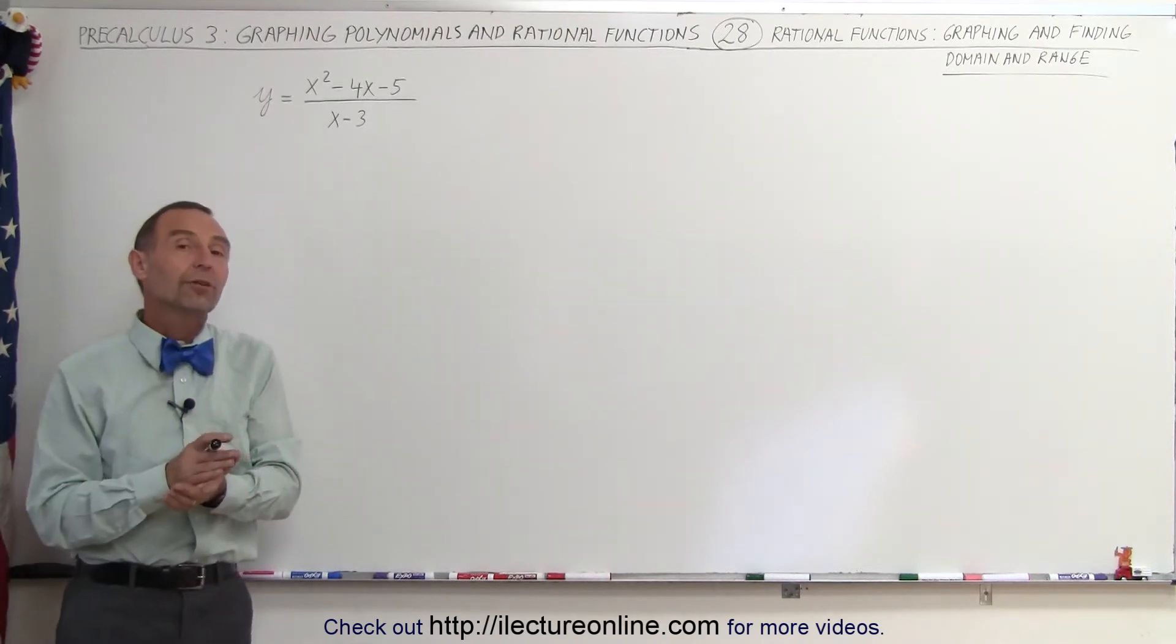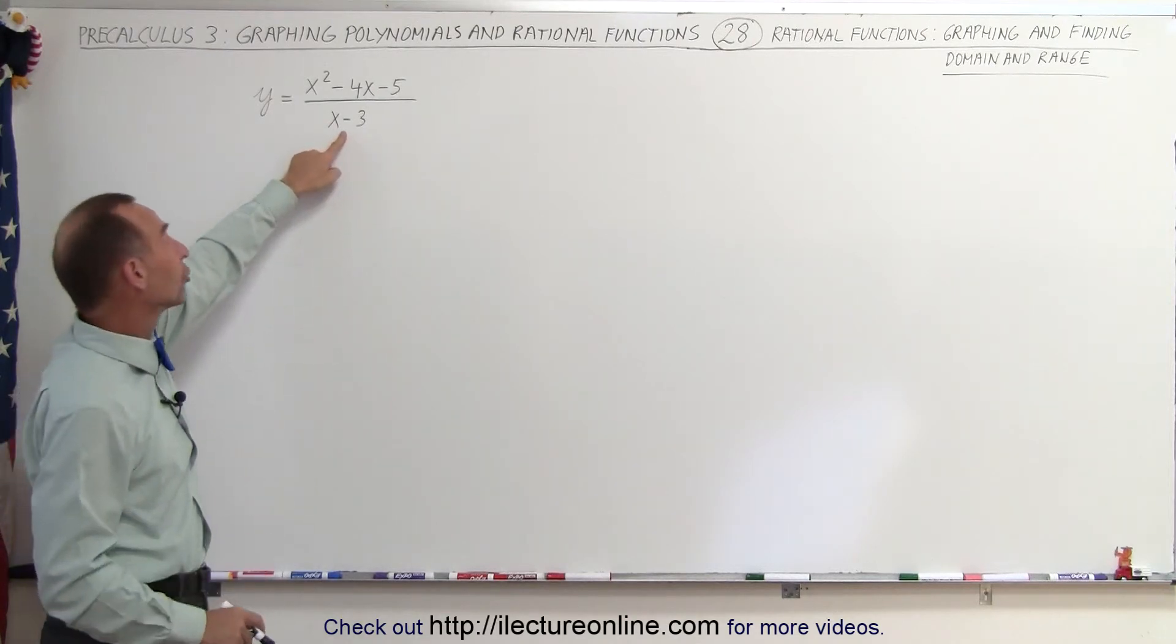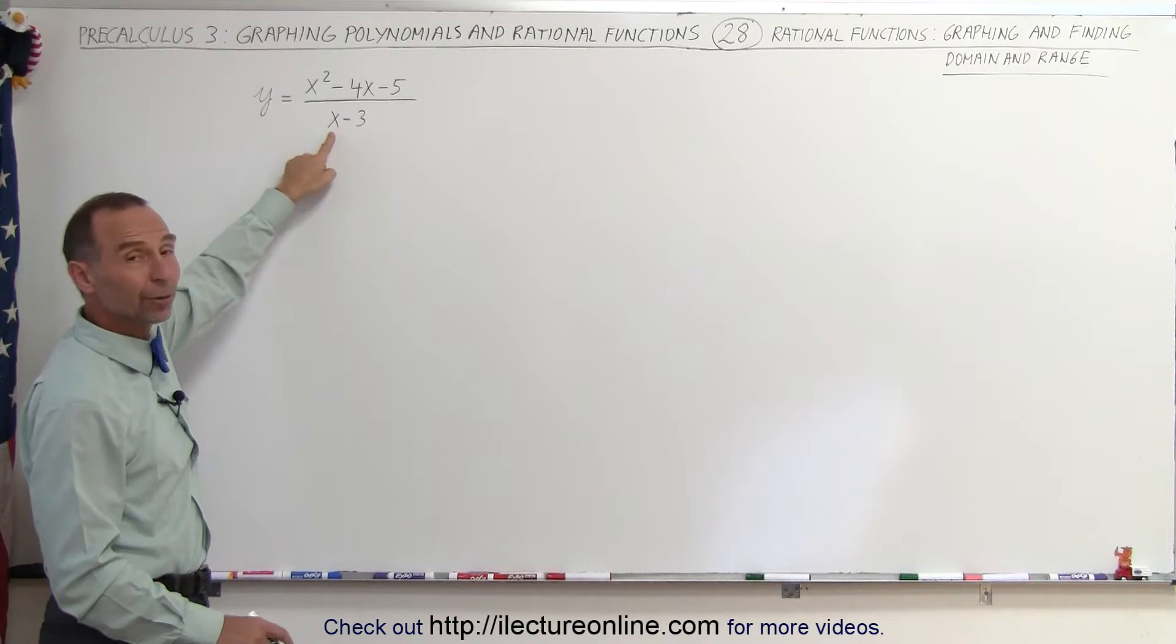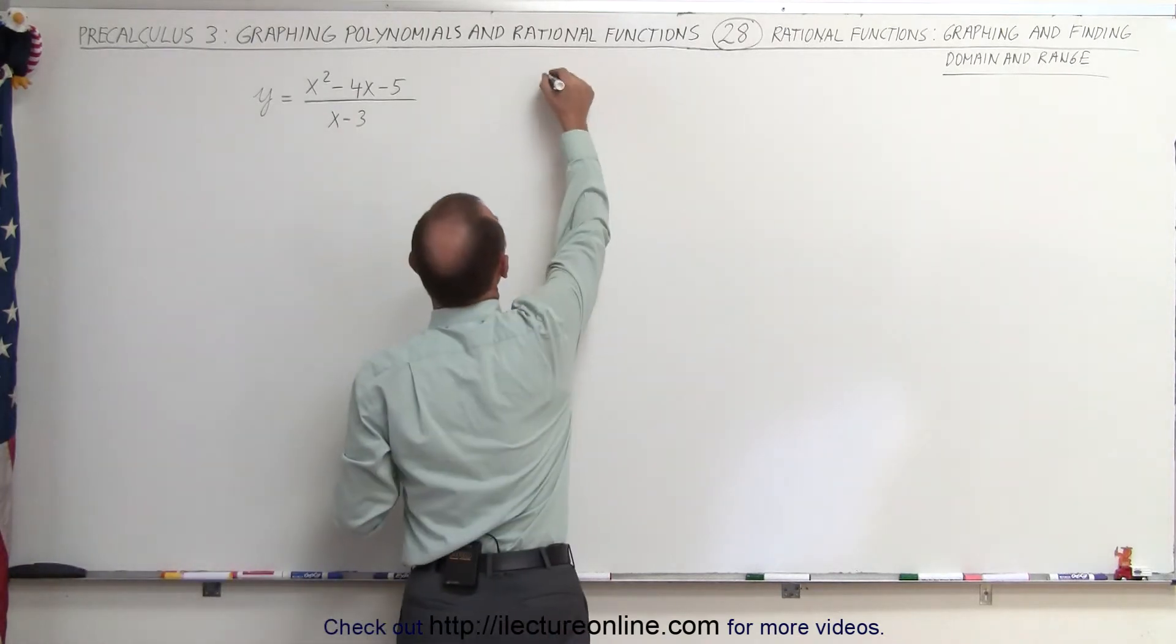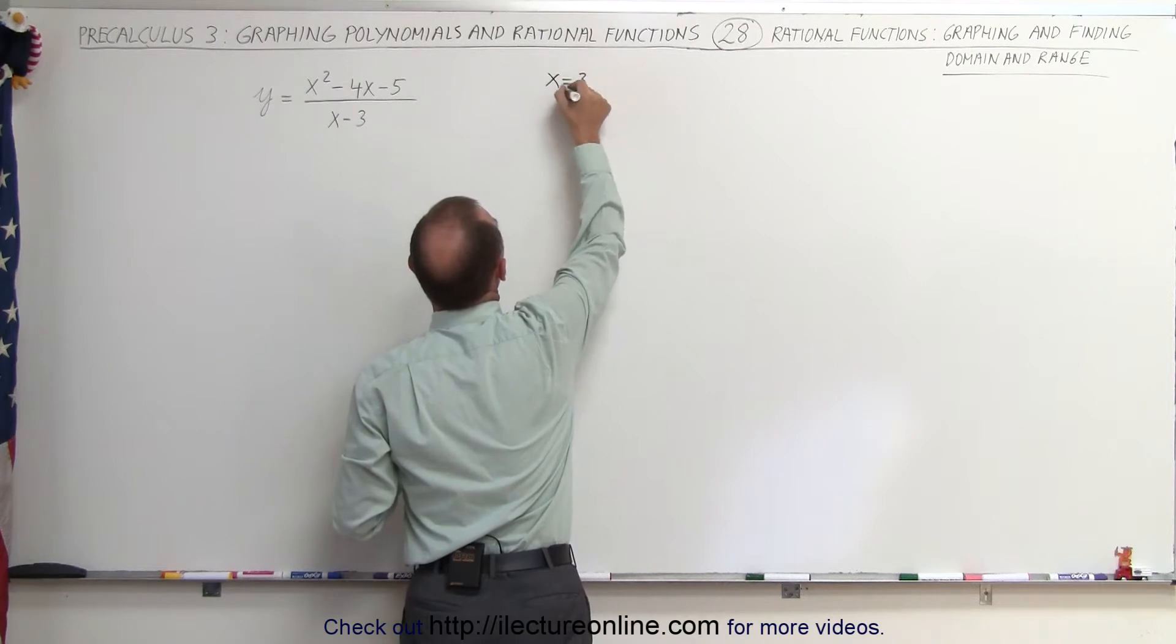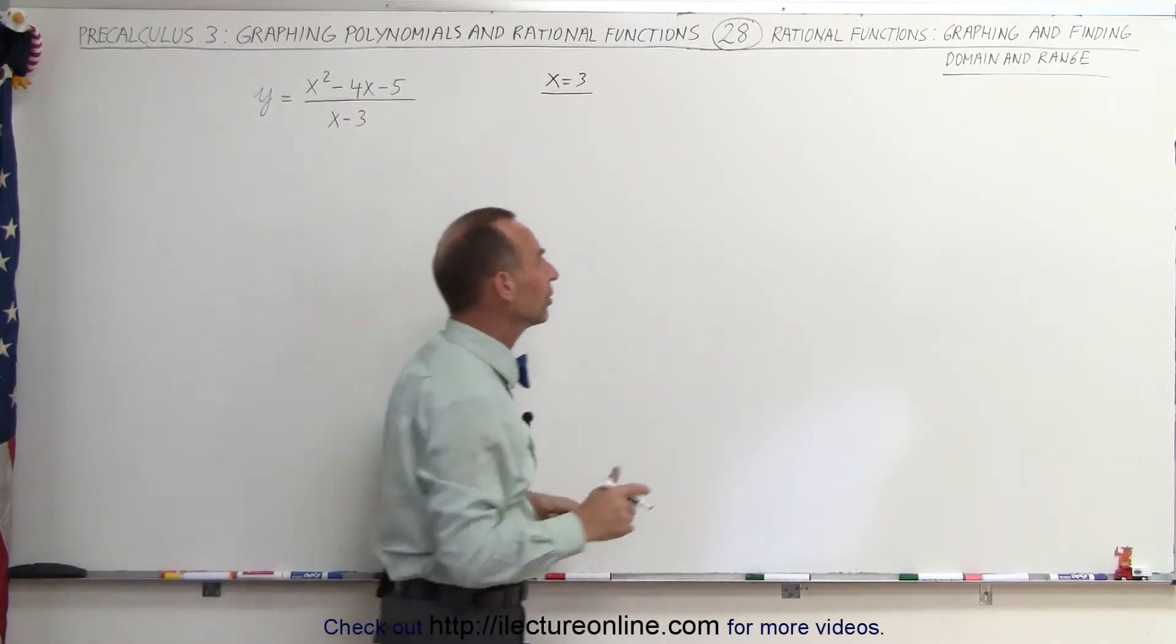Where we start is by looking at the denominator and seeing what will make the denominator zero. It's quite obvious when x equals 3, 3 minus 3 is zero, the denominator will be zero. So x equals 3 is the value that makes the denominator zero. Therefore that will be a vertical asymptote.